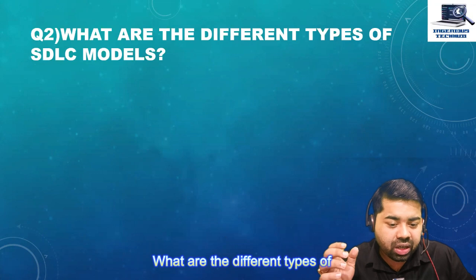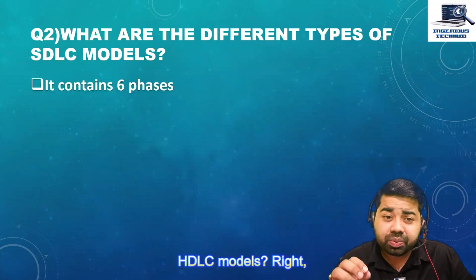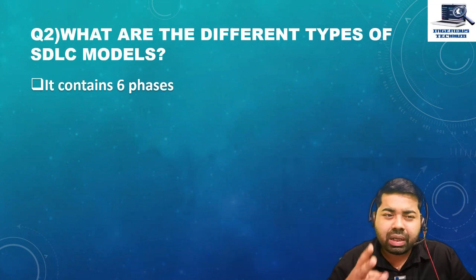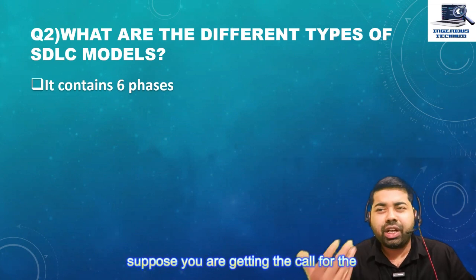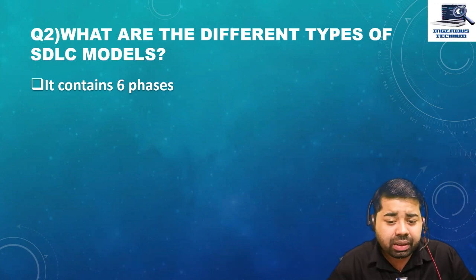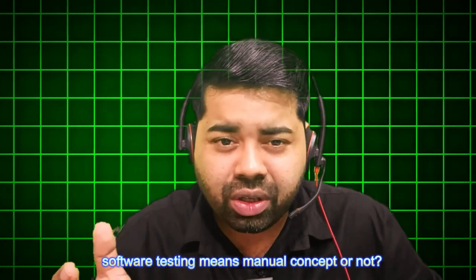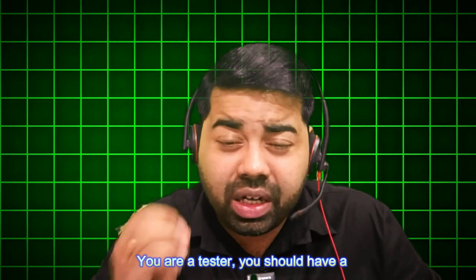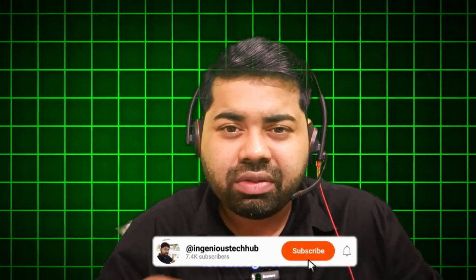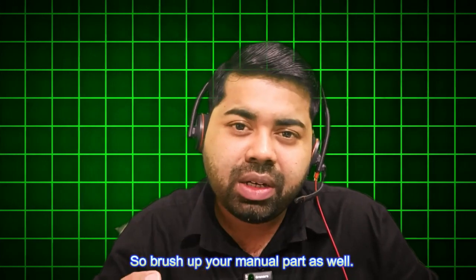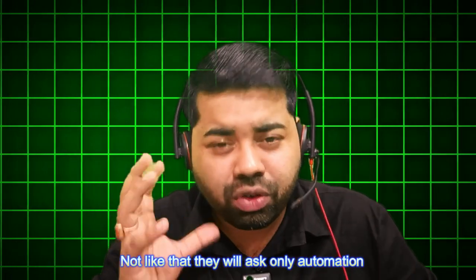The next question is: what are the different types of SDLC models — Software Development Life Cycle? Many people are confused when they get a call for automation and are asked manual or software testing concept questions. Definitely they will ask you — you are a tester, you should have knowledge of testing concepts as well, so brush up your manual part too. They will not ask only automation questions.